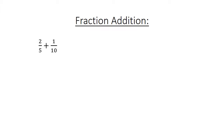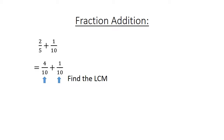Fraction addition: 2 over 5 plus 1 over 10. Find the lowest common multiple: 4 over 10 plus 1 over 10 equals 5 over 10, which equals 1 over 2.